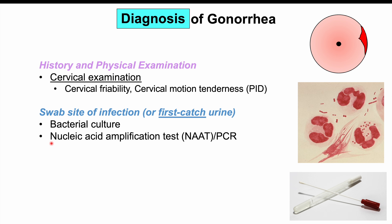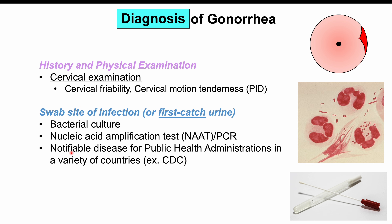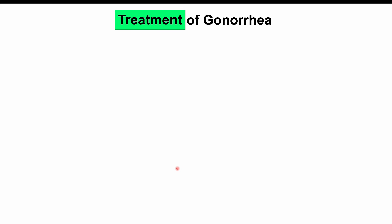A nucleic acid amplification test (NAAT) has become more popular as an alternative, offering greater sensitivity and specificity without needing to culture live organisms — only the organism's genetic material is required. Gonorrhea is also a notifiable disease that must be reported to public health administrations such as the CDC.